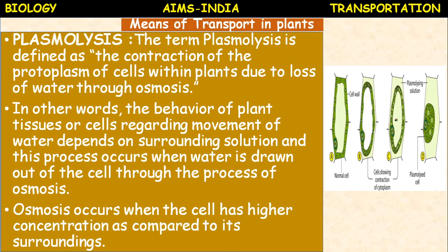The extra hypertonic external solution continues to withdraw water from the central vacuole by exo-osmosis, and causes incipient plasmolysis - the second stage. At this stage, hypertonic solution enters the cell in between the protoplast and the cell wall. Due to continued exo-osmosis, the protoplast shrinks further - this is known as evident plasmolysis, the final stage.